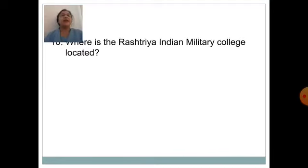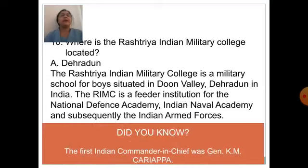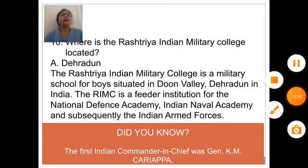Where is the Rashtriya Indian Military College located? Answer is Dehradun. The Rashtriya Indian Military College is a military school for boys situated in Doon Valley, Dehradun. The RIMC is a feeder institution for the National Defense Academy, Indian Naval Academy and subsequently the Indian Armed Forces. Fun fact: The first Indian Commander-in-Chief was General K.M. Kariyappa. Now students, we will meet in our next session. Till then, goodbye, have a nice day.